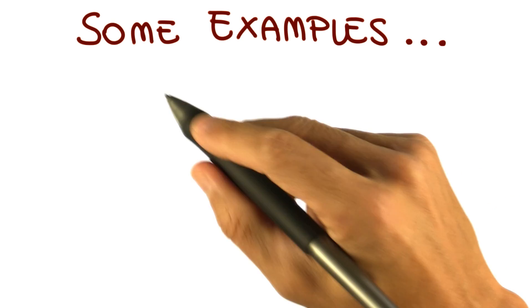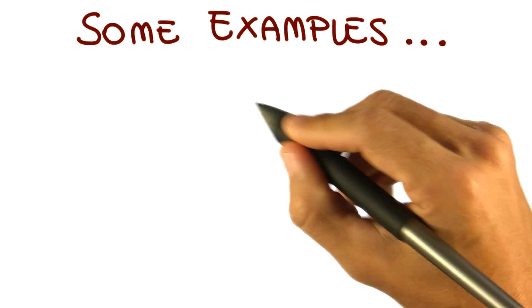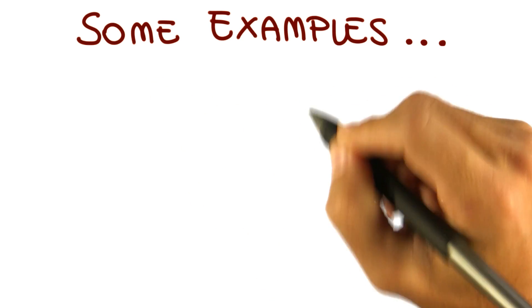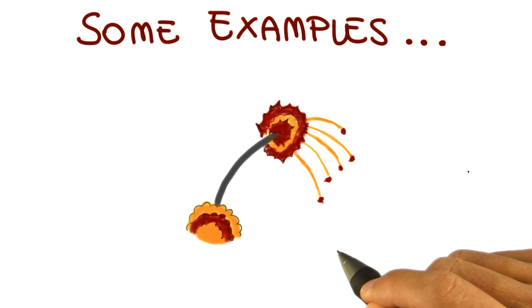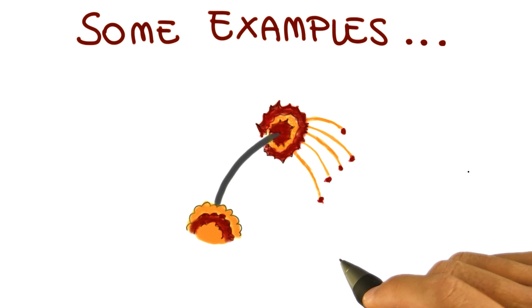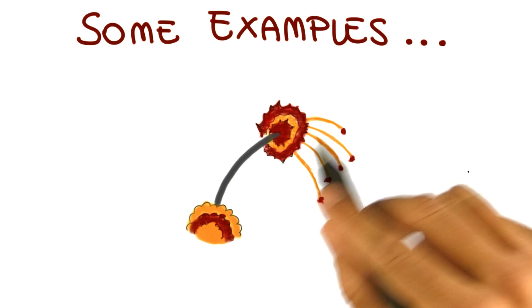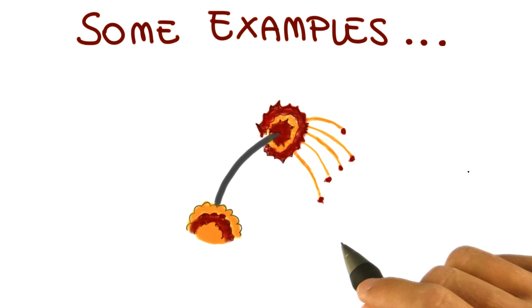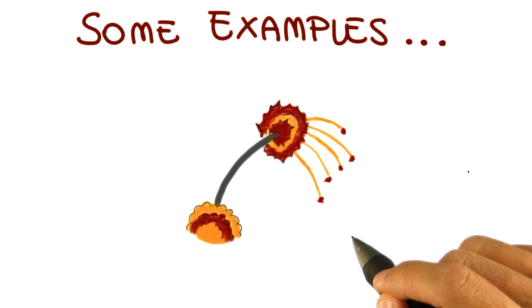So let me start with some examples that motivate the need for verifying software. The first example I want to use is the famous Ariane 5 — a rocket that exploded not too long after departure because of a software error.